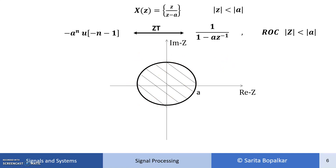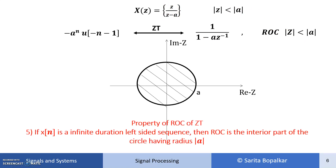So here we can say that our sequence minus a raised to n times u of minus n minus 1 has Z transform Z upon Z minus a, or equivalently 1 upon 1 minus a times Z raised to minus 1, with ROC mod z less than a — the interior of the circle. This gives us the fifth property: if X of n is an infinite duration left-sided sequence, meaning it exists only for n less than 0, then the ROC is the interior of the circle having radius a.